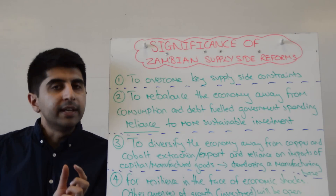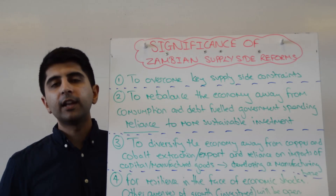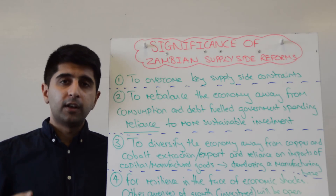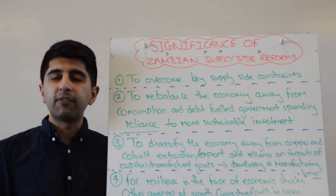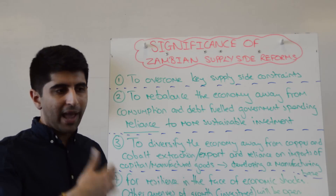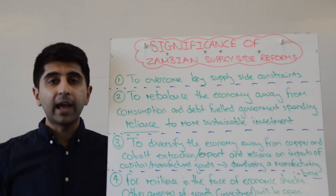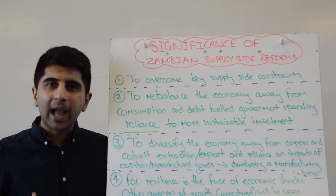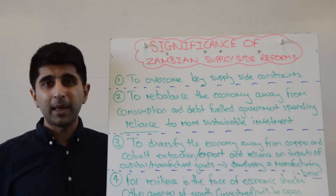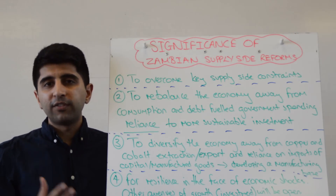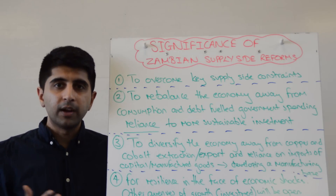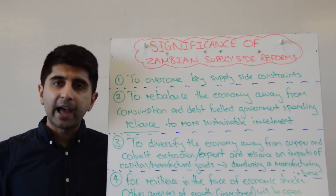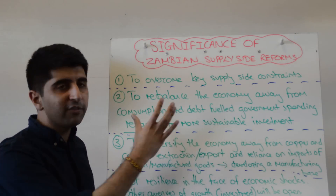Secondly, importantly, to rebalance the economy. It's mentioned very clearly in extract five that Zambia is heavily dependent on private consumption and debt-fueled government spending for growth — i.e. for AD shifting to the right. But is that really sustainable in the long term? What if something happens to one of those two, especially government spending? If the government racks up too much debt, that avenue could close down. The government may have to cut spending or raise taxes — and what impact would that have on the economy? So we need to rebalance the economy away from these two things.